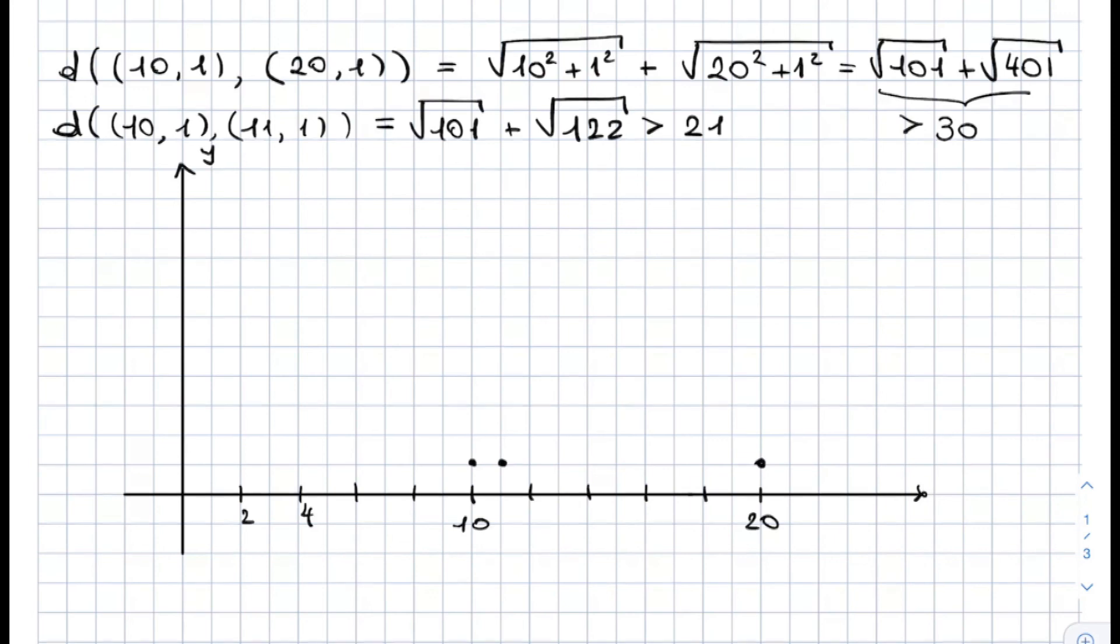The reason why this is happening is that we're forcing, in order to compute the distance between the two points, to start from one of the two points, go to the origin, and then come back. And this makes distances grow bigger, even if the points can be drawn very near to each other.